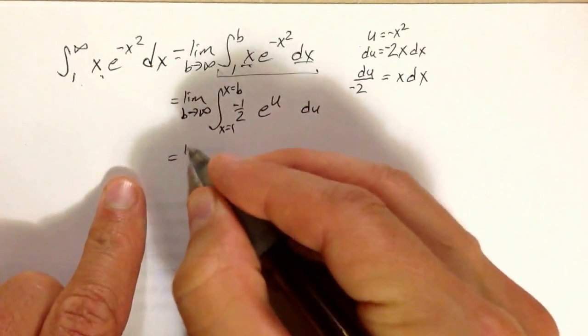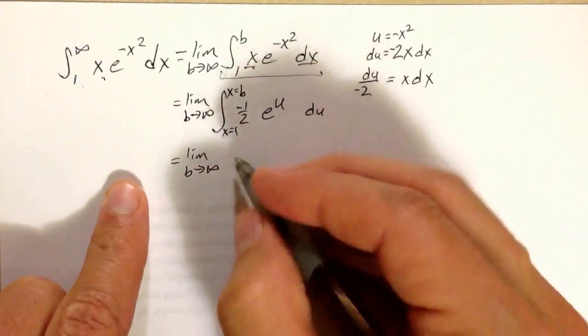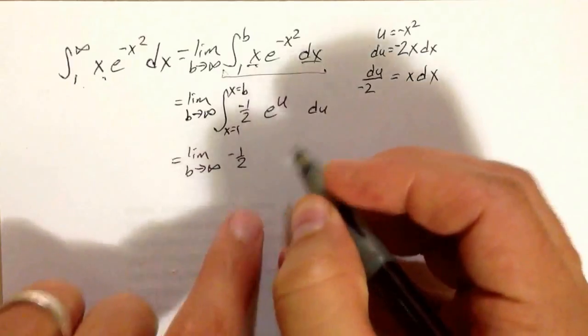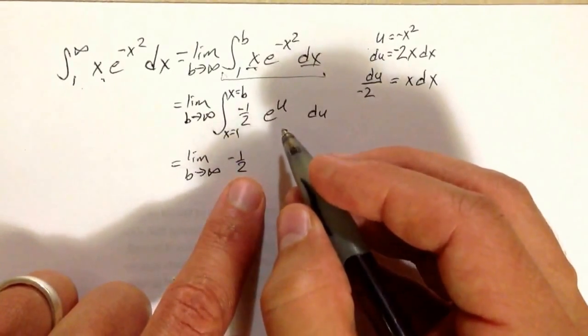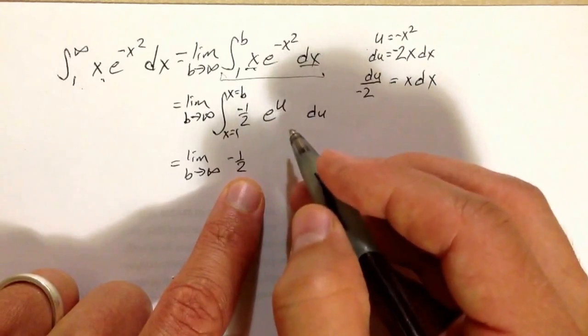So the limit as b goes to infinity, integrating a negative 1 half times something. Pull the negative 1 half out. The integral of e^u is e^u.